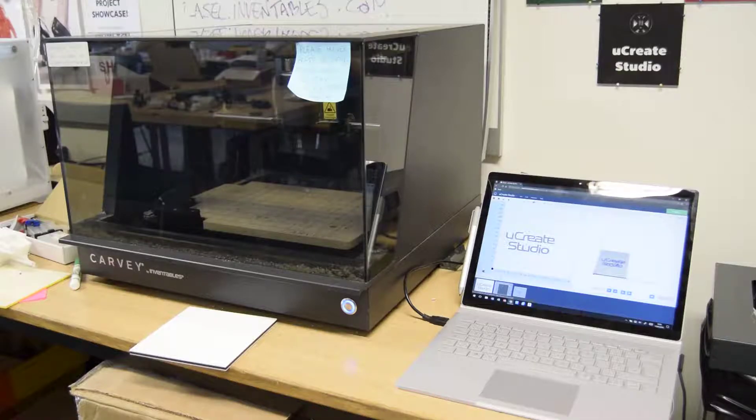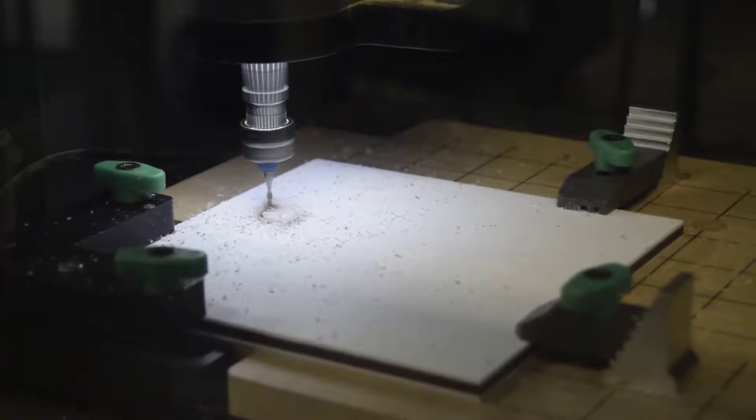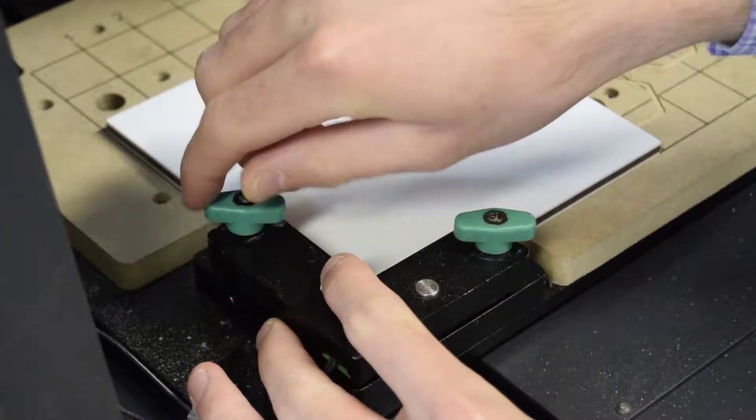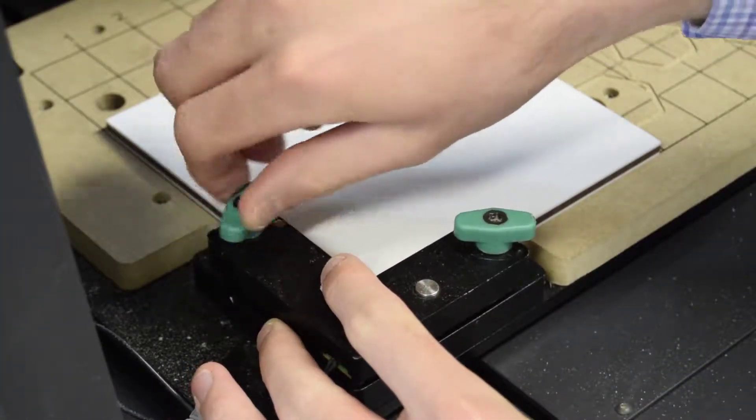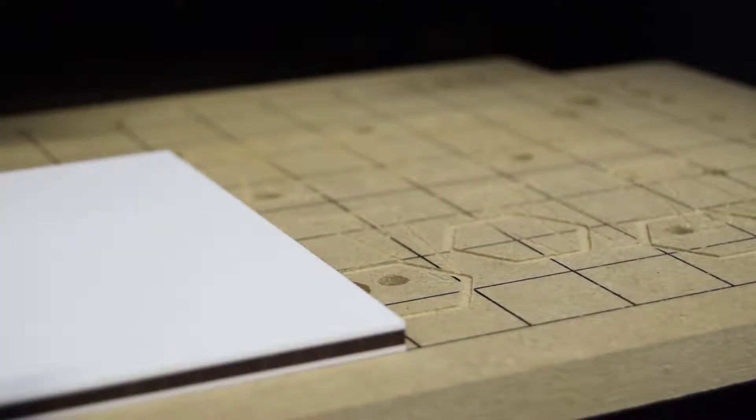The main components you need to be aware of are the drill head, which cuts away at the material; the smart clamp, which holds the material and is used to calibrate the machine; and the wasteboard, which supports the material being cut but is also cut away at itself.